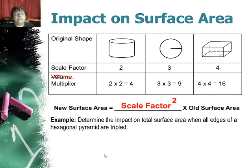So in this example, we want to determine the impact on total surface area when all edges of the hexagonal pyramid are tripled. Well, the scale factor is 3, so I'm just going to do 3 times 3, which is 9, so it's going to be 9 times bigger.